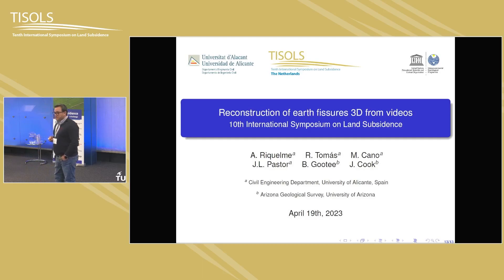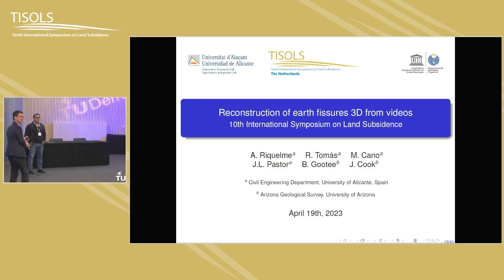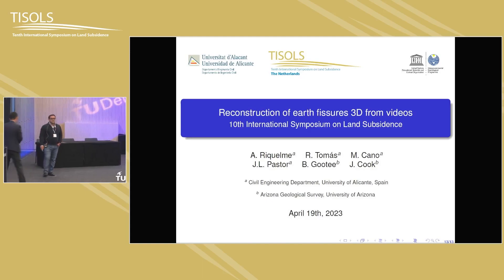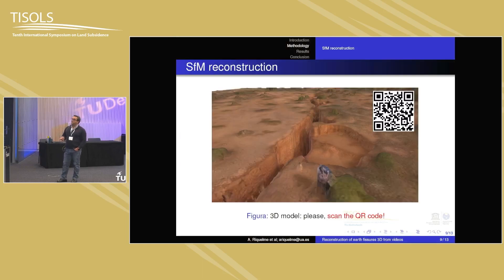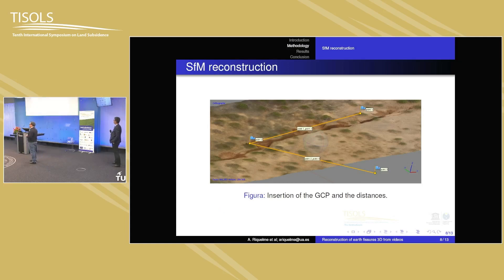Thank you very much for your attention. We had a very good presentation and a very interesting video. Any questions? One audience member asked whether vertical ground control point coordinates were needed. The answer was no — only horizontal. The ground control points obtained were from the surface. What you need to do in the 3D reconstruction is insert real dimensions or coordinates, and the process itself corrects all camera orientation and lens distortions. You don't need to perform a full 3D survey of the ground control points.